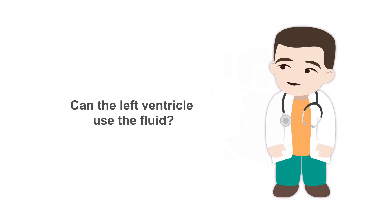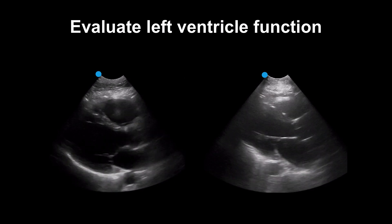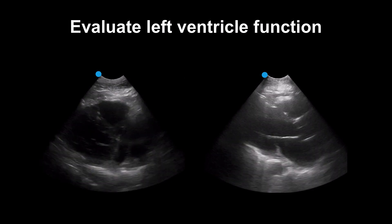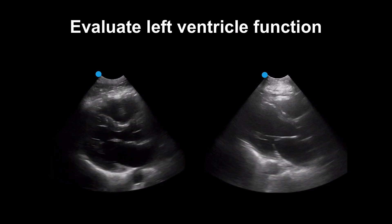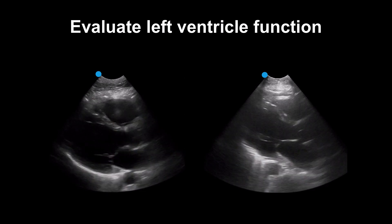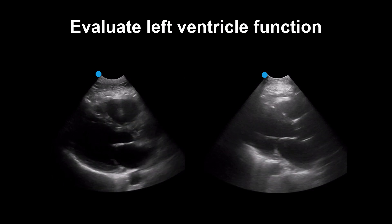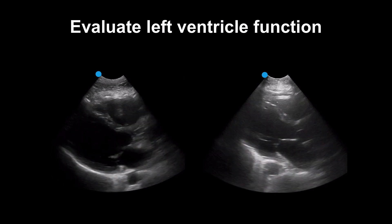We bring together results from ultrasound of these organs. Starting with the heart — when gauging fluid tolerance we can break the heart into left and right sides. For the left ventricle, we ask: can it use more fluid? Consider two patients: one with a normal ejection fraction, one with a profoundly decreased ejection fraction. From the standpoint of fluid tolerance, both might be able to use some additional fluid.